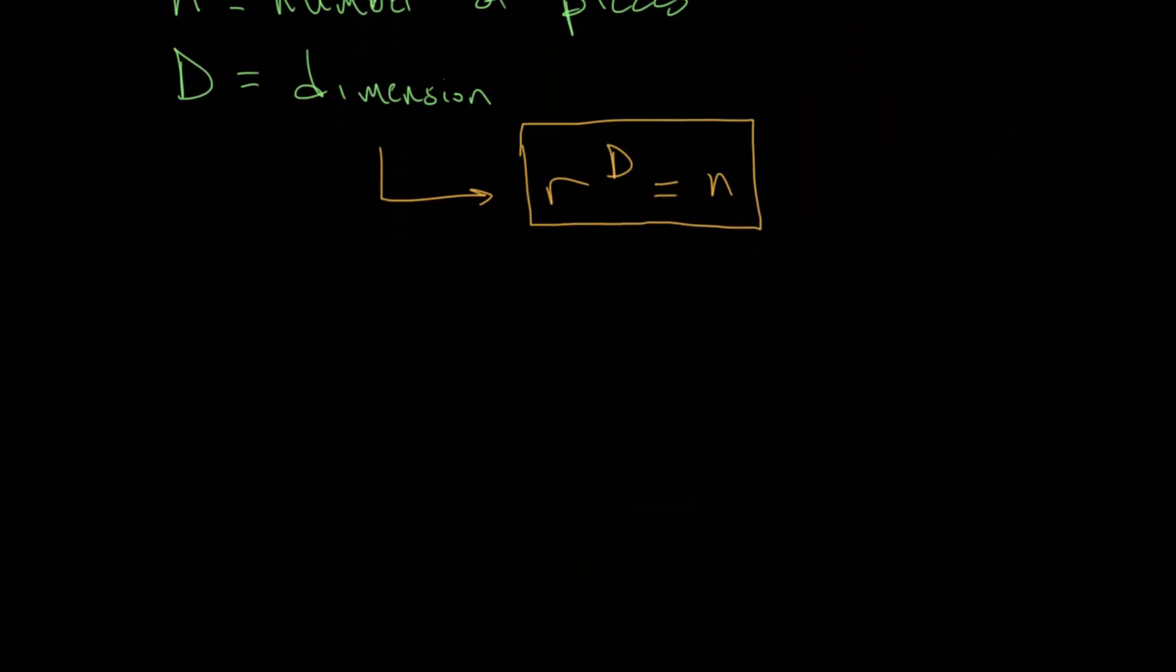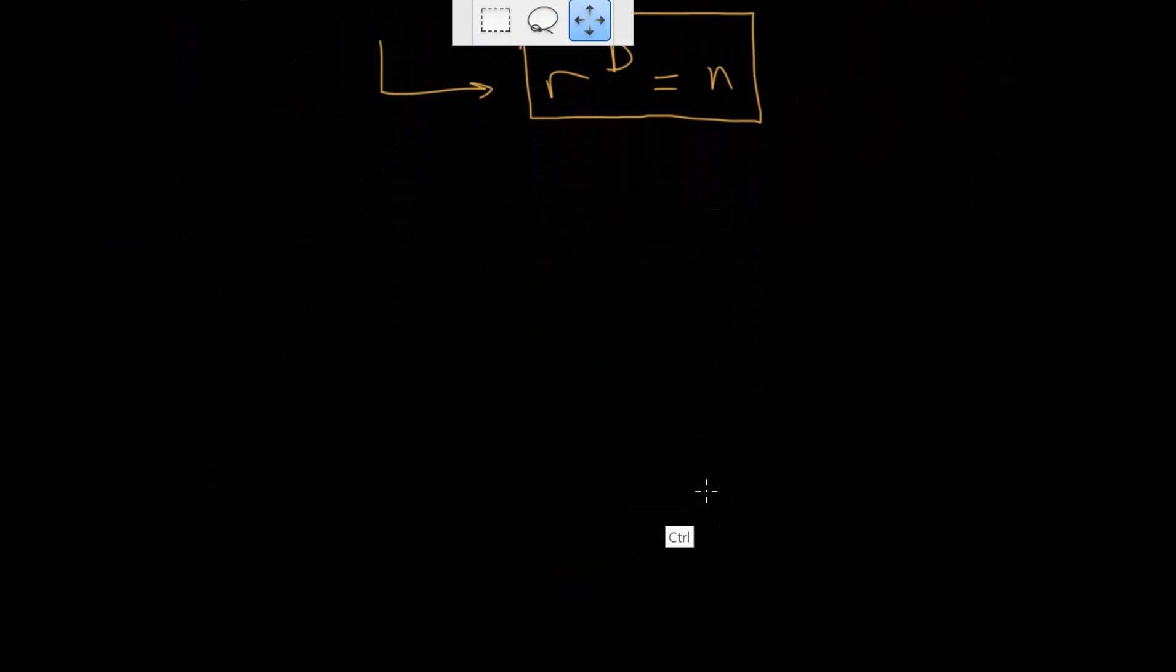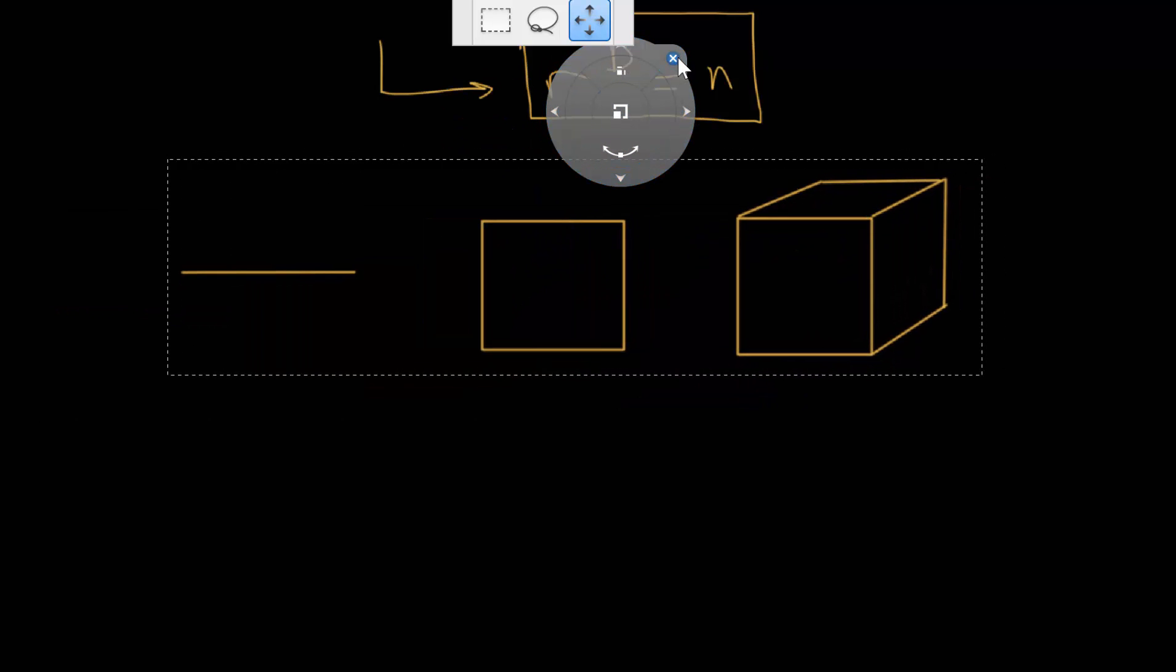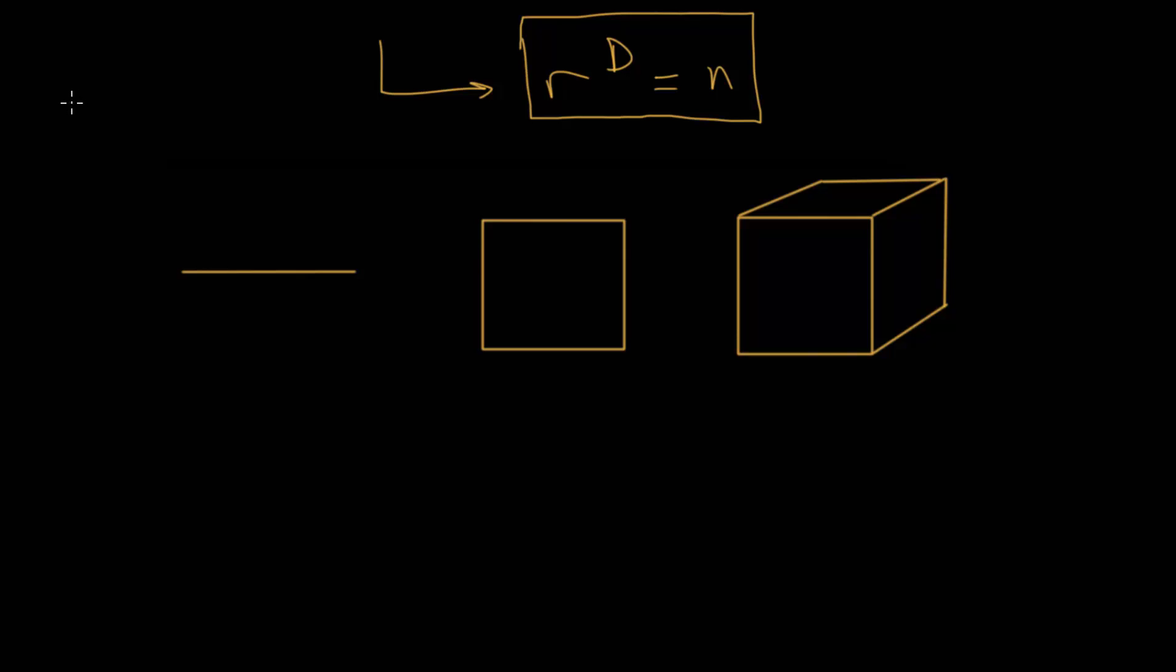If we look at dividing these pieces up into two instead, we can now say our scale factor is 1 over r, or in this case, 1 half. We can divide each of these into two, and we'll still find the same relationship. For the line, we have two pieces. For the square, there are now four pieces. And for the cube, we have eight total cubes, smaller cubes here.